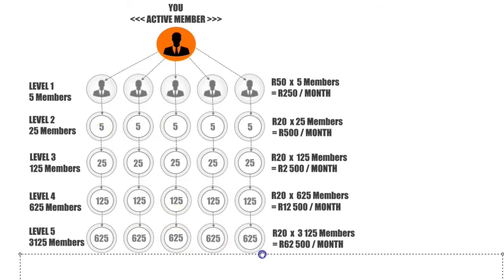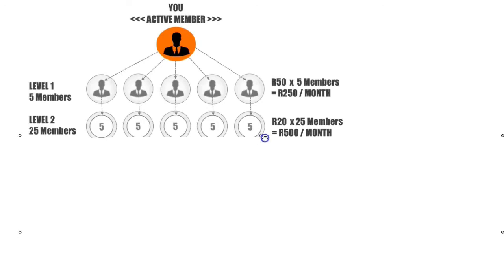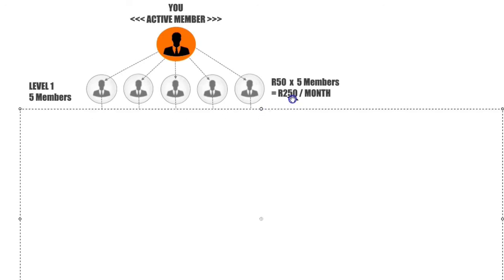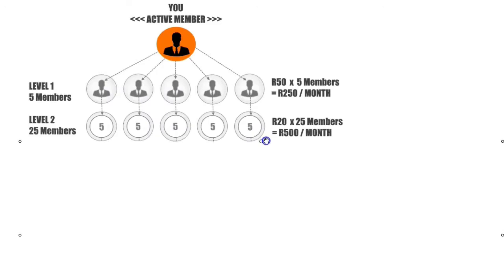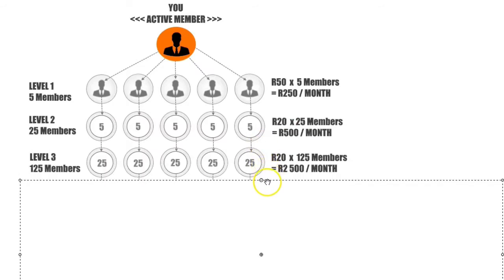All the downlines in your Millionaire Library network will then refer 5 people each for 5 levels deep. So since you referred 5 members to your Level 1, this means in Level 2 you will automatically have 25 members earning you 500 Rand. In Level 3, 125 members will earn you 2,500 Rand.